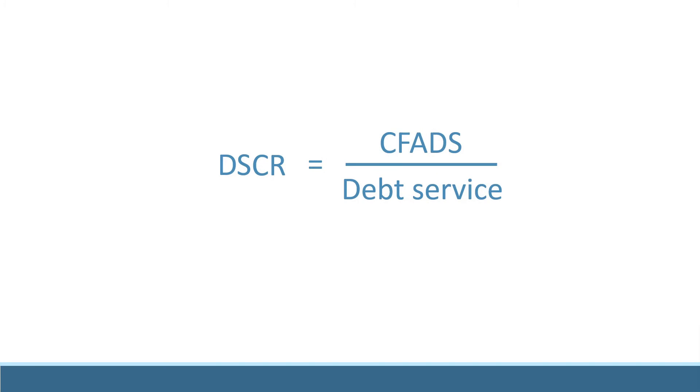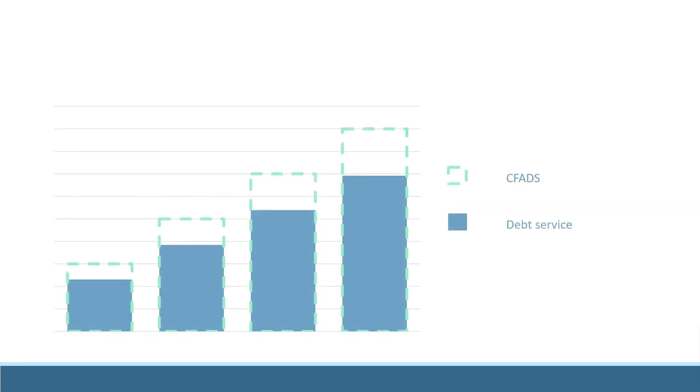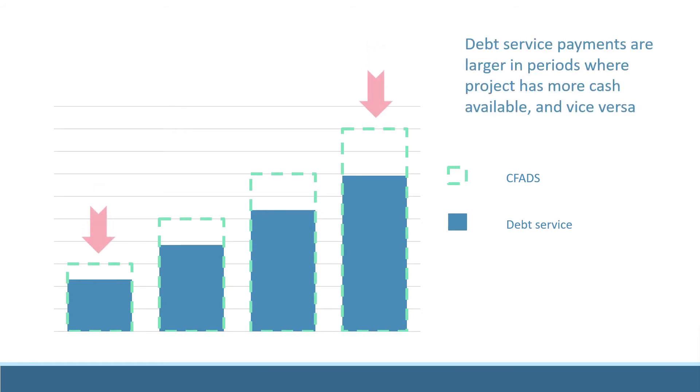Notice that sizing debt payments this way has another advantage. It allows payments to be structured in such a way so that when the project has more cash available it makes bigger payments, and when it has less the payments are smaller. Because of this, this kind of calculation is also known as debt sculpting or tailoring.